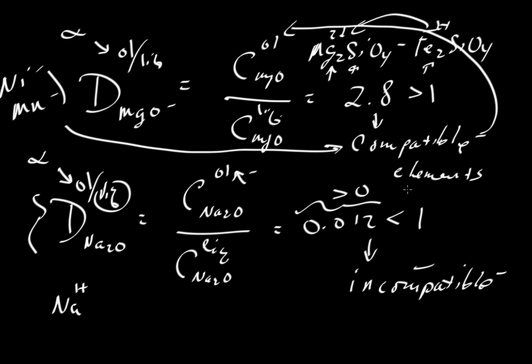So this again is just a way to introduce this terminology. We talk about compatible elements and incompatible elements, and then if things are really incompatible, we can talk about elements that are highly incompatible, and that would just mean that these are things where the D is much, much less than 1.